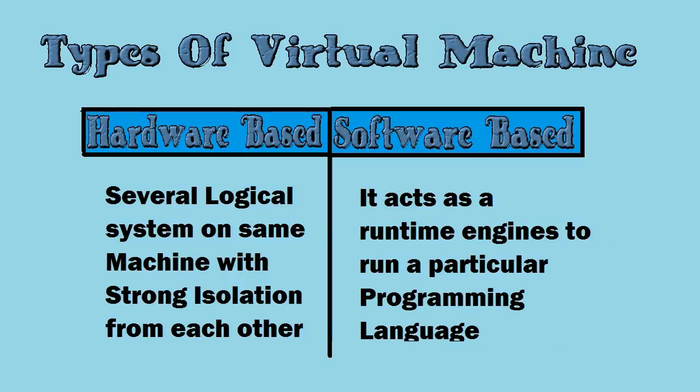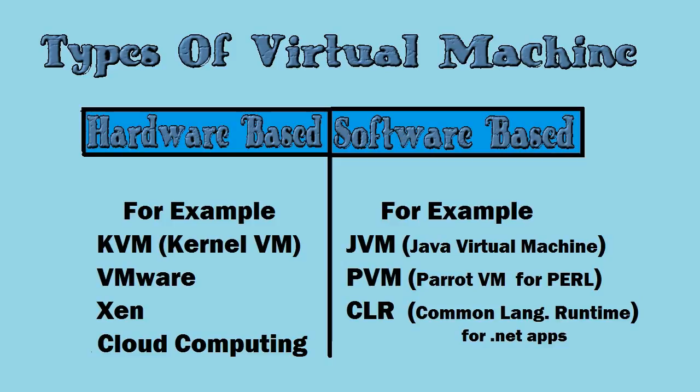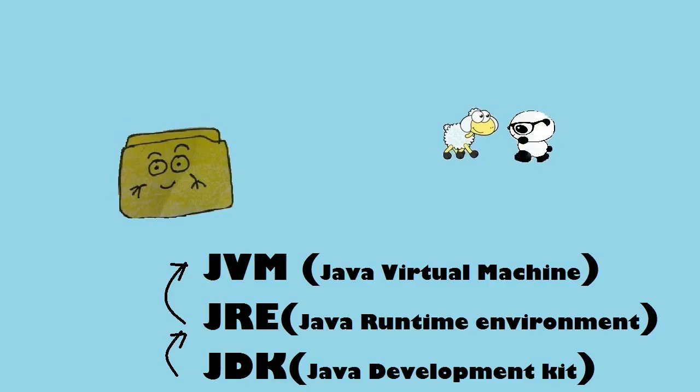Software-based or application-based virtual machines act as a runtime engine to run a particular language. For example, JVM acts as a runtime engine to run Java applications, TVM for running scripting languages like Perl, and CLR (Common Language Runtime) acts as a runtime engine to run .NET-based applications. So JVM is a virtual machine which acts as a runtime engine to run Java applications.